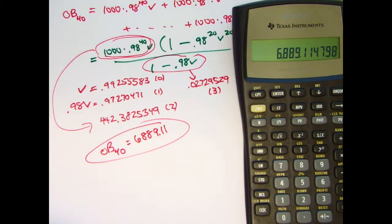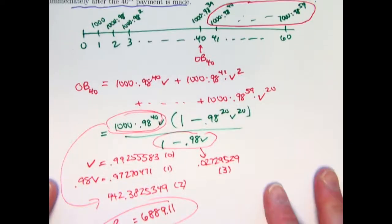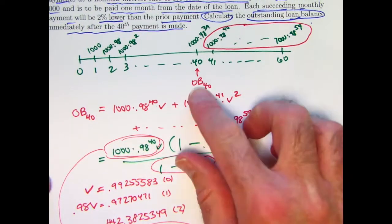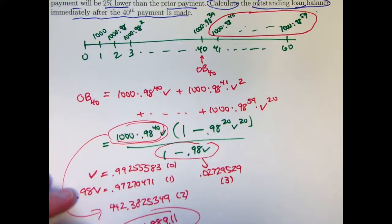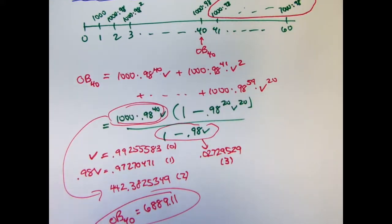So again, we use the prospective method for finding the outstanding balance at time 40. And we needed to use the formula for a finite geometric series to help us find the final answer.